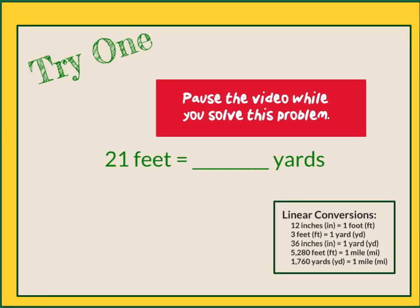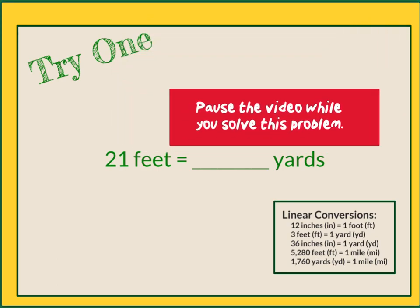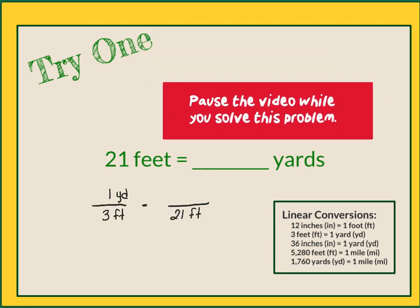Again, it's time for you to do one on your own. Pause the video while you work, and then unpause it to check your answer. I have created my fractions: 1 yard equals 3 feet. If I'm going from 3 feet to 21 feet, I would need to multiply 3 by 7, and I do the same thing to the numerator: 1 times 7 gives me a new numerator of 7. So 21 feet equals 7 yards.